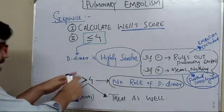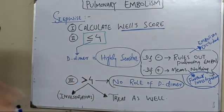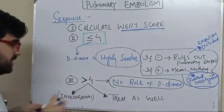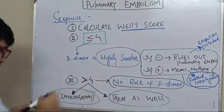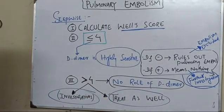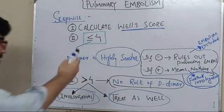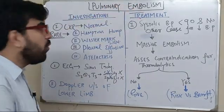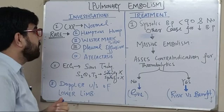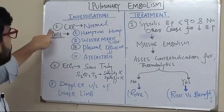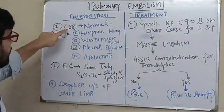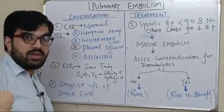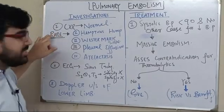If the Wells score is more than four, you have to do two things: investigate and treat the patient simultaneously. The first investigation is the chest X-ray. Usually the chest X-ray is normal, but there are rare findings you can see on the chest X-ray.